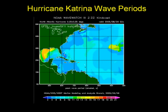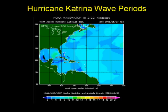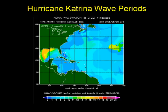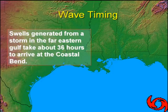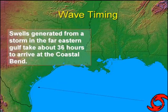The NOAA wave watch model also simulates wave periods. This simulation from Hurricane Katrina shows the very long period waves that propagated west into the western Gulf of Mexico. Waves travel at a speed of one and a half times the wave period in deep water. For example, a 20 second period wave moves at a speed of 30 knots, but they will decay to a lower wave height and longer period as they travel. Swells generated from a storm in the far eastern Gulf take about 36 hours to arrive at the Texas coast.